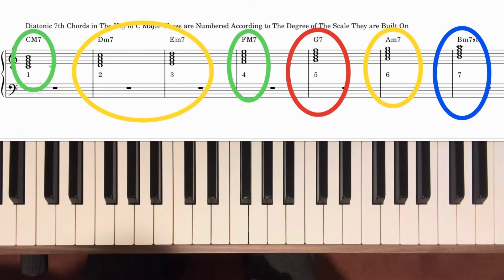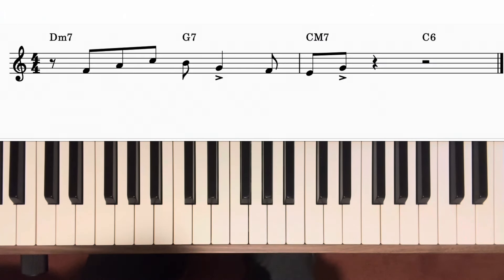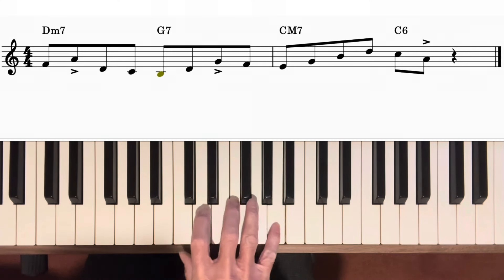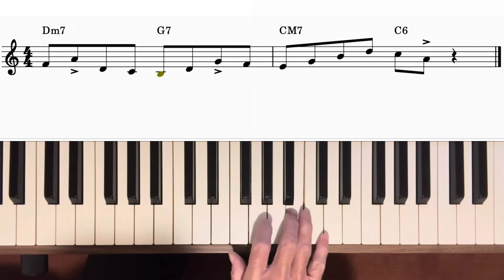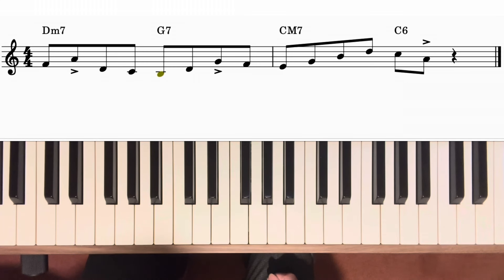Jazz improvisers use a combination of motives, which are short melodic ideas, and lines using mainly eighth notes. I'm going to look at the lines first, and I'm going to look at eighth note patterns that you can use which contain chord notes only. With my left hand I'm just going to play two notes from each chord.